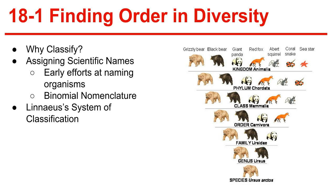Why classify? To study the diversity of life, biologists use a classification system to name organisms and group them in a logical manner. Taxonomy is the classification of organisms and assigning each one to a universally accepted name. To avoid confusion caused by regional names, biologists use a classification system to group organisms logically and to assign names.